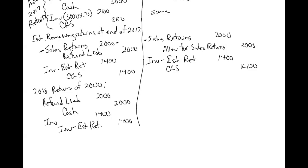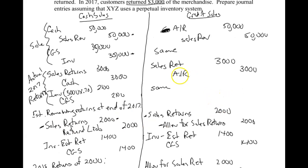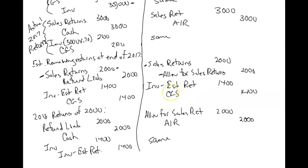On the credit sales side, we use the allowance for sales returns — $2,000 — and since it was credit sales, we reduce their accounts receivable balance, assuming they haven't paid us yet. The inventory journal entry is the same on both sides. The main difference between credit and cash sales is the allowance versus refund liability, and accounts receivable versus cash throughout the problem.